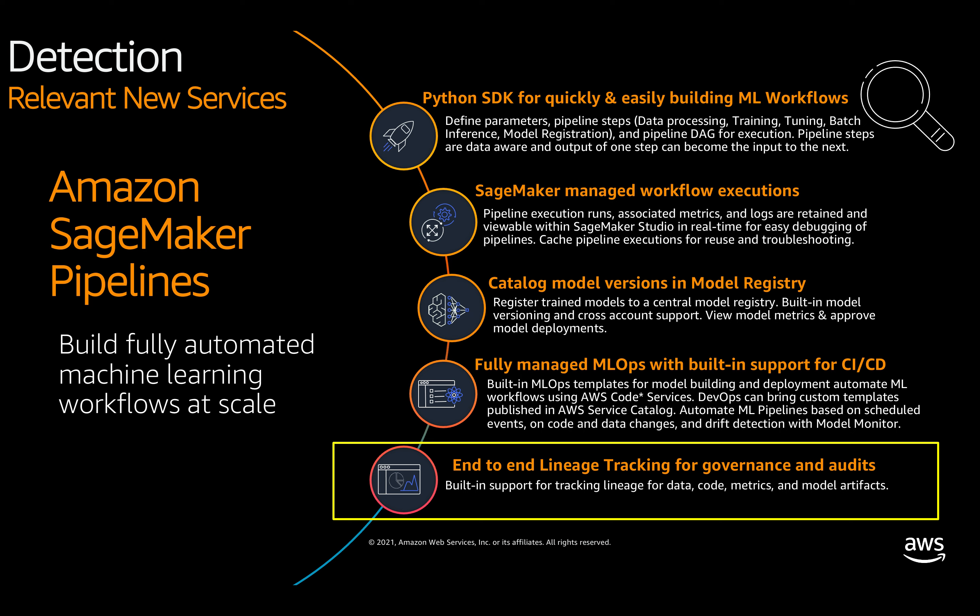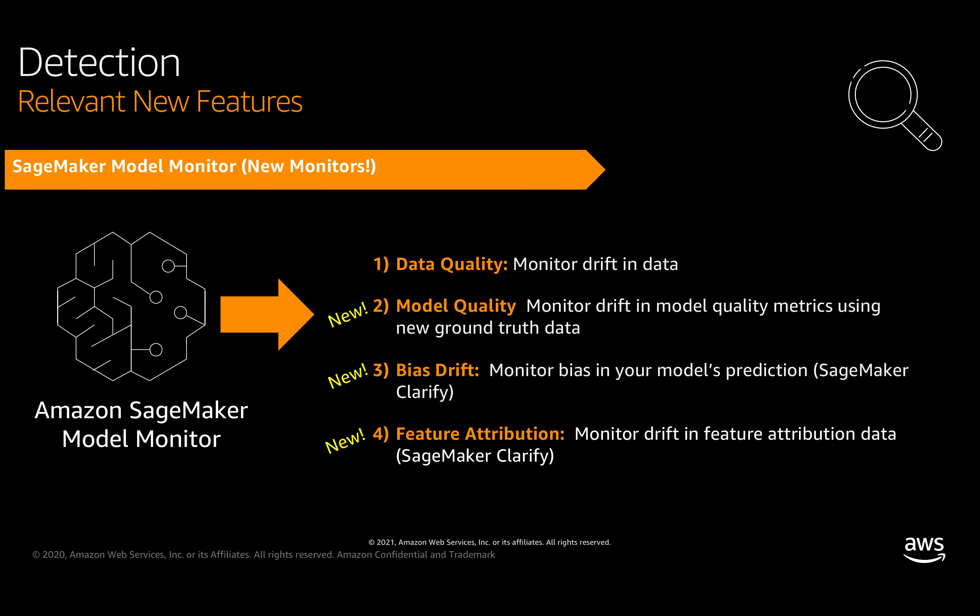To wrap up detection, Amazon SageMaker Model Monitor had new features added. After a model is deployed into production, you need to ensure it doesn't degrade over time. Continuously monitoring model performance in production allows you to identify the right time and frequency to retrain, and it can also provide a signal of unexpected behavior to alert on. Amazon SageMaker Model Monitor helps maintain high-quality models by detecting model and data drift in real time and sending alerts for immediate action. The data quality monitor existed prior to reInvent, but three additional monitoring types were added: model quality, bias drift, and feature attribution drift.